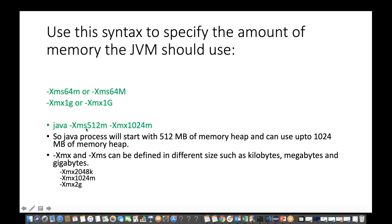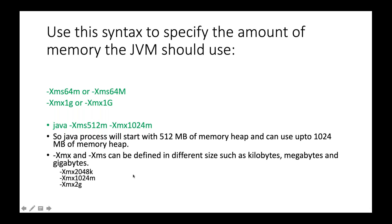For another example, if you want to define 512 MB as a minimal size, you can write XMS 512M and XMX 1024M. So 1024 MB is the maximum size. The Java process will start with 512 MB of memory heap and can use up to 1024 MB. You can also write 1G since 1G equals 1024 MB. XMS and XMX can be defined in different sizes such as kilobytes, megabytes, and gigabytes. So you can write 2048k for kilobytes, 1024M for megabytes, or 2G for gigabytes.